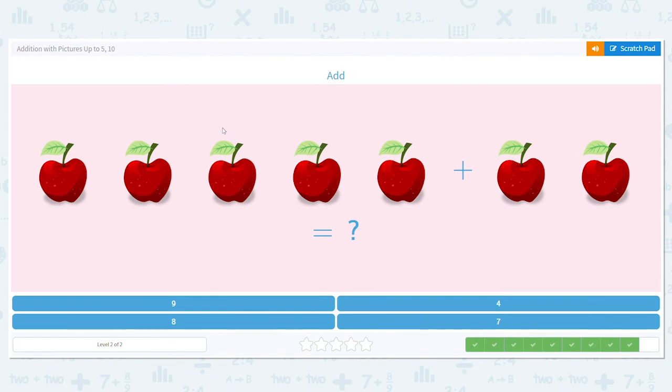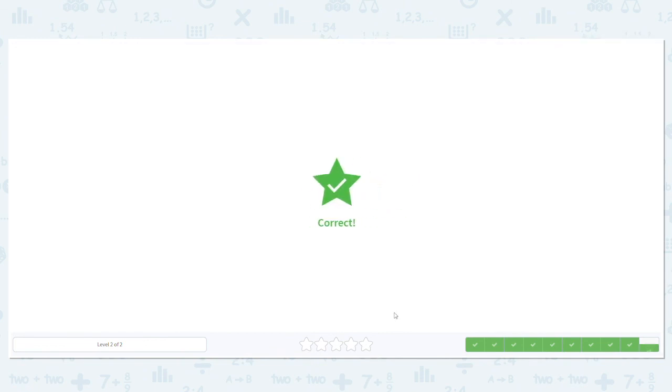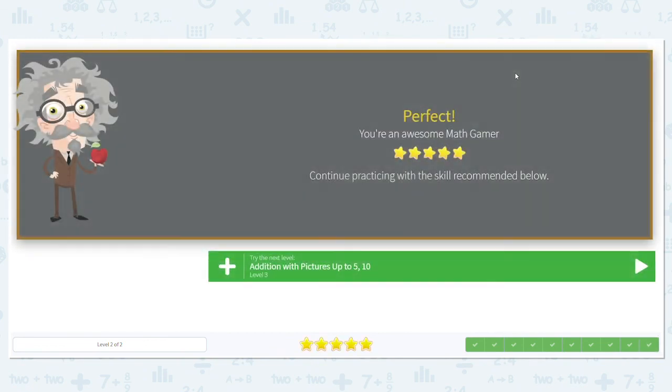Okay, last one. We have 5 apples plus 2 apples. Is that going to give us a total of 9, 4, 8, or 7 apples? Let's see if you can figure this one out on your own. 5 plus 2. So we have 5, 6, 7. So 5 plus 2 is 7. Great job. You did amazing.